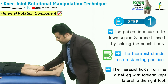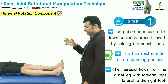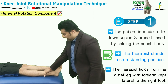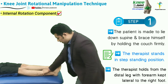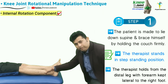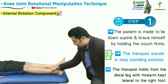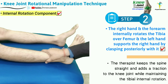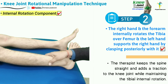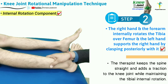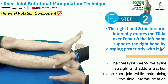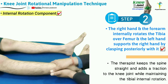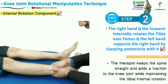To restore tibial external-to-internal rotation joint play, the right hand holds the anterior lower portion of the leg and the right forearm comes from the lateral side of the patient's right foot. The right hand and forearm both internally rotate the tibia over the femur. The left hand supports the right hand, with fingers clasped posteriorly.